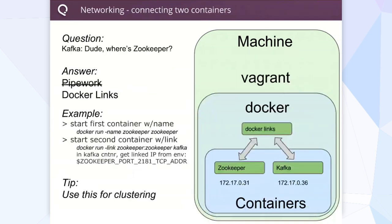One other thing we had was a script called pipework, which we originally used, but now with the Docker links feature, that's been replaced. We've updated and have our new code on the repository. What Docker links allowed us to do: we had Zookeeper and Kafka — Kafka uses Zookeeper to store its offsets — so we needed those two containers to talk to each other. We ended up using pipework, and now links, to set up a network bridge between the two containers, which lets us put in a static IP and allow the containers to talk to each other.